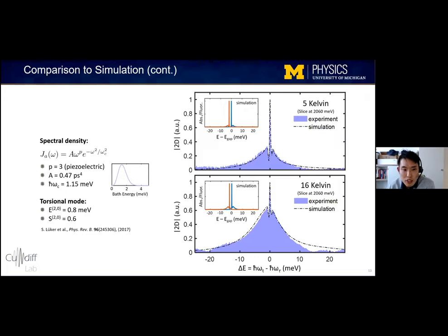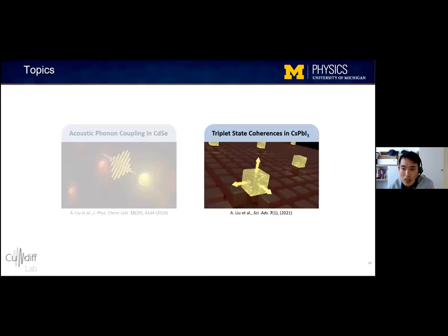And just to show you the simulation parameters quickly, the spectral density that we used was derived for a spherical quantum dot and has three main parameters. So this first parameter p can either be one or three, depending on whether the acoustic phonon is coupled primarily by a deformation potential or a piezoelectric interaction. And we found that we could only achieve good agreement with the experiment by assuming a dominant piezoelectric interaction. And this parameter A is the exciton phonon coupling strength, which determines the size of the pedestal. And omega C is a cutoff frequency that determines the width of the pedestal and also the spectral density. And for the torsional mode, we use the calculated energy 0.8 meV and a Huang-Rhys parameter of 0.6.